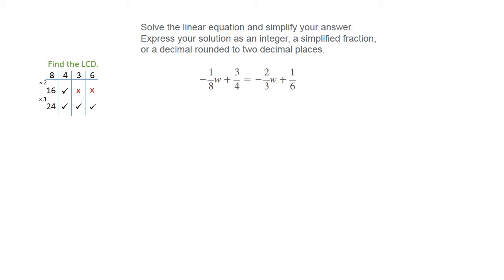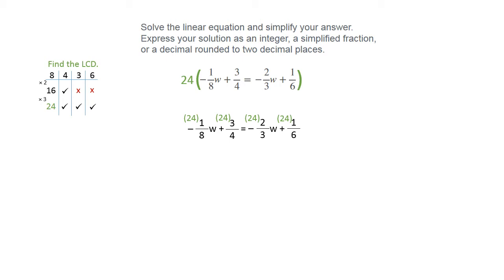So we're going to take 24 as our LCD and we're going to multiply it by the entire equation. The way to do this by hand is to write your equation out and put little 24s on top of each fraction, because it's going to be distributed with each fraction. You can use a calculator to do the multiplication, or if you're doing this by hand, you're going to divide each denominator into the 24.